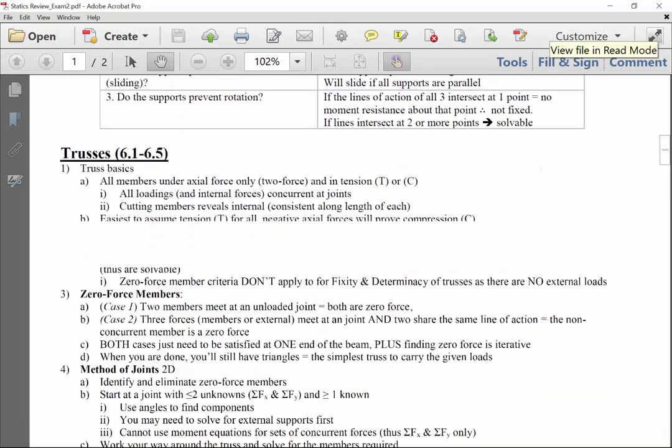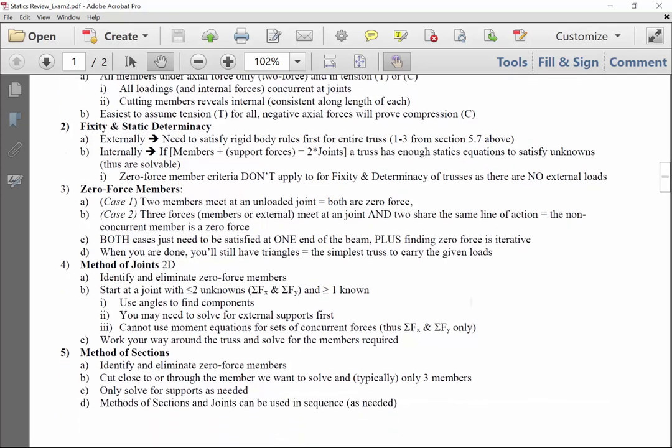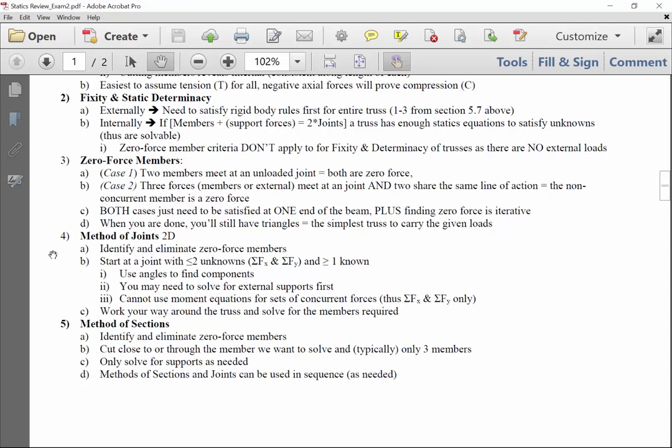Moving on now into trusses. The basics of trusses is that we assume all trusses are made of two force members. Being two force members, they're always going to be either in pure tension or pure compression. Often we assume members are in tension until we solve; we get negative numbers, we know they're in compression. You can also go through in advance and analyze tension versus compression before you start writing your equations. Your equations will still validate or disprove your hypothesis of the direction of those forces.